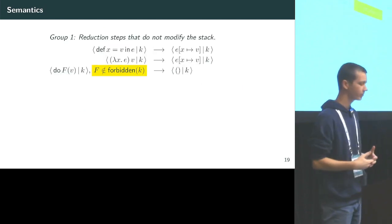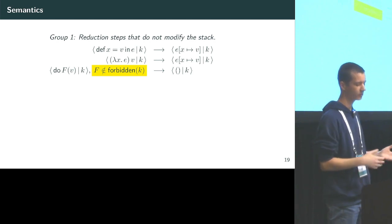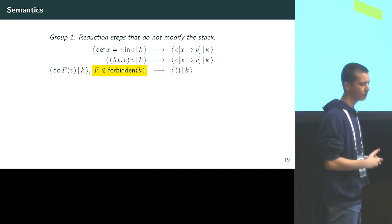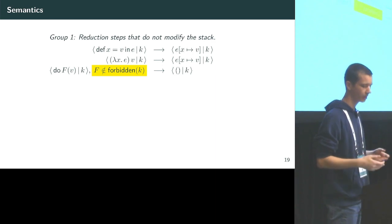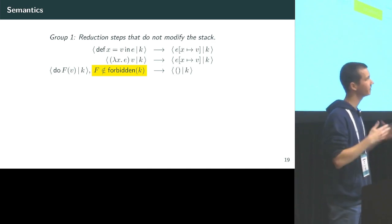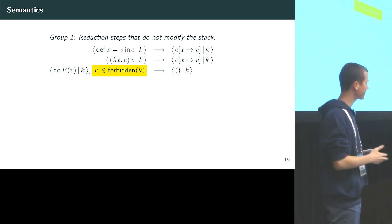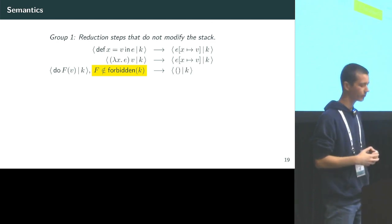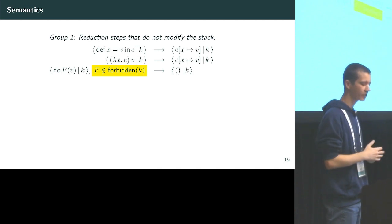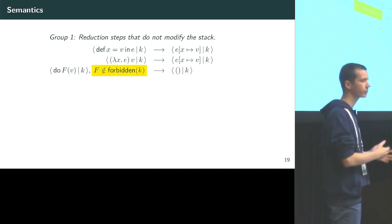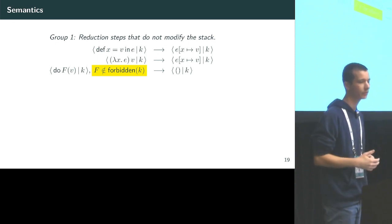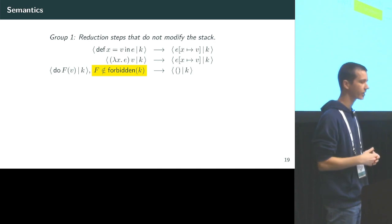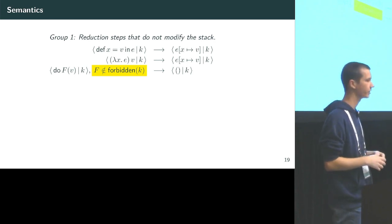The semantics fall into three groups. The first group does not modify the stack and includes standard rules for definitions and lambdas, where we substitute the variable in the body of the lambda. The 'do' expression is more interesting: this is where we actually enforce effect exclusion. When trying to execute effect f, we require that f not be forbidden by the context. If it is forbidden, we cannot advance.